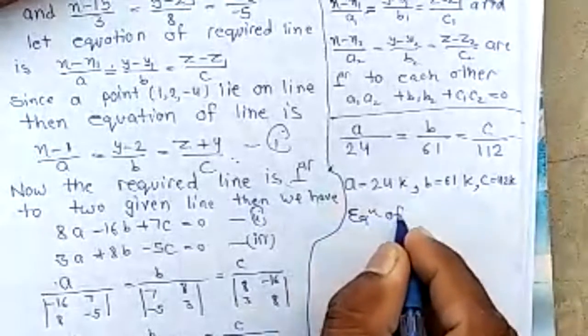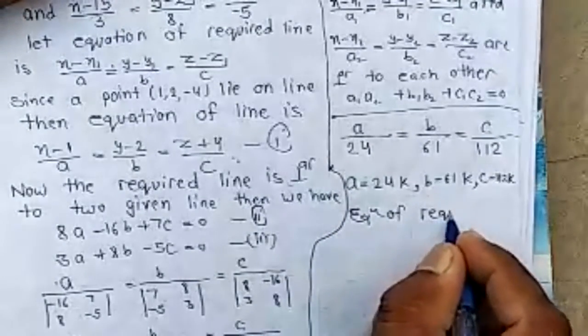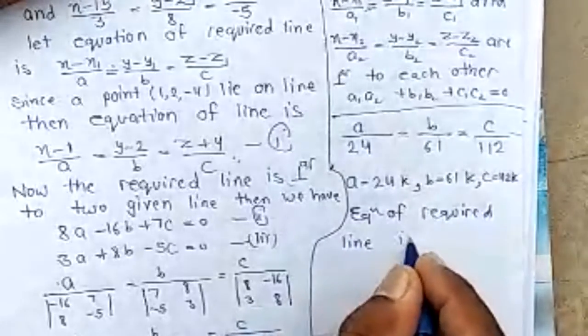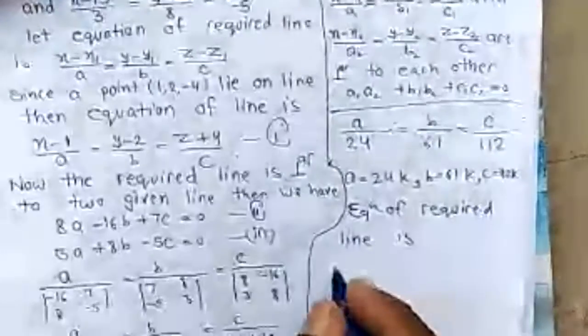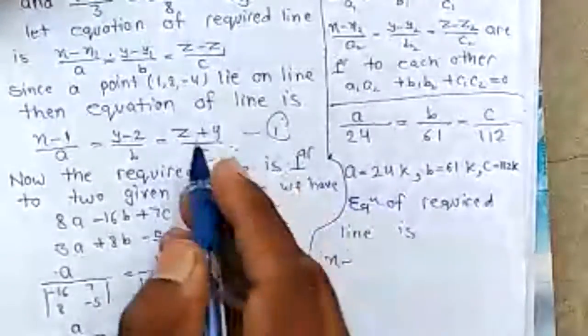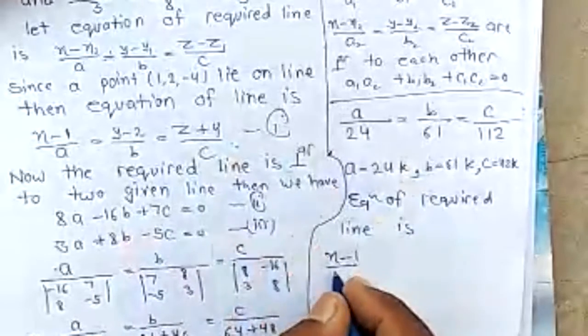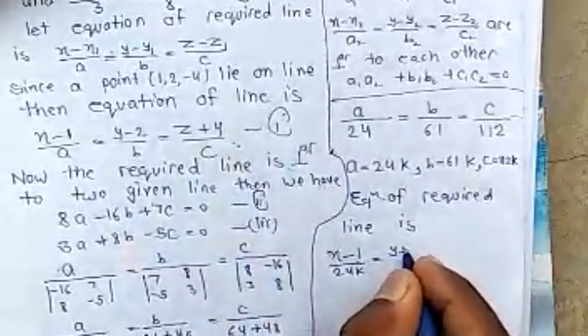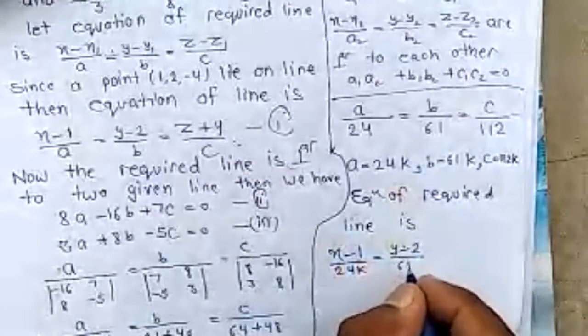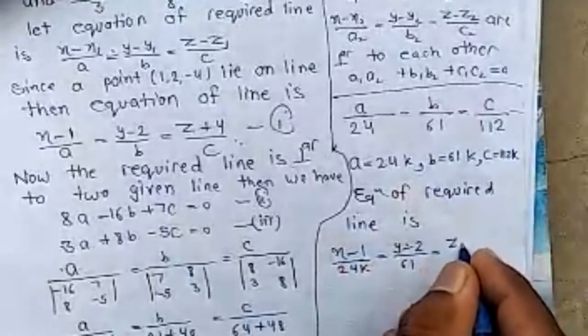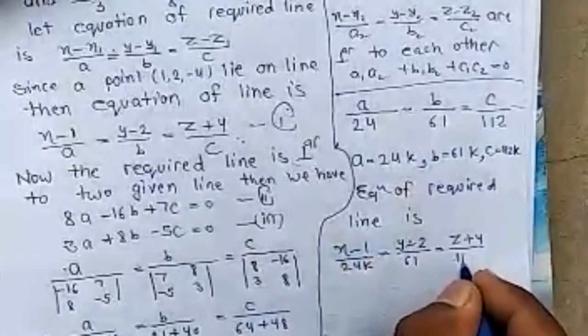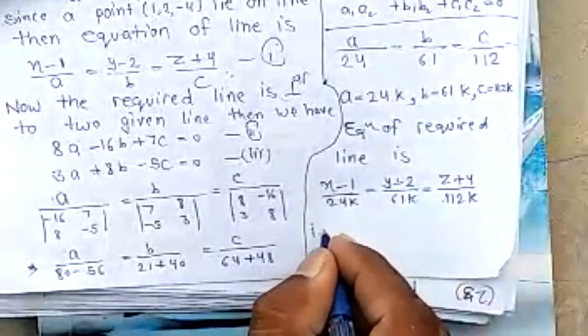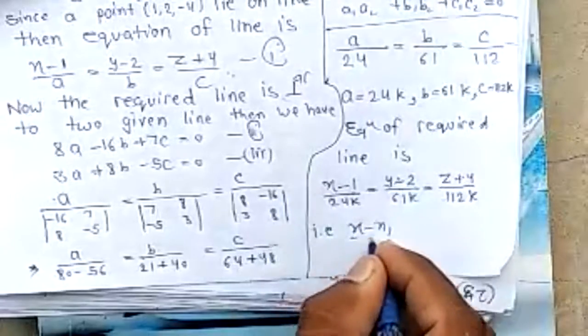Equation of required line is x minus 1 by 24k, y minus 2 by 61k, z plus 4 by 112k. Multiplying by k, we get x minus 1 by 24,